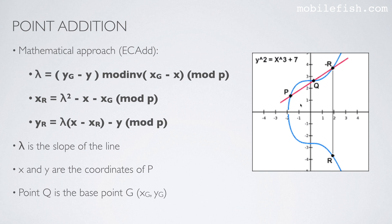Lambda is the slope of the line. X and Y are the coordinates of point P, and point Q is the base point G. Using these three equations, you calculate the x- and y-coordinates of point R.